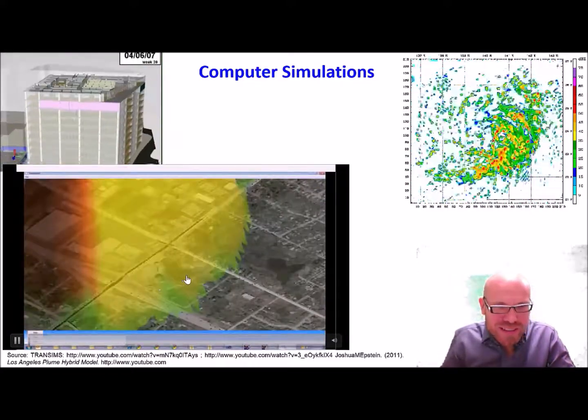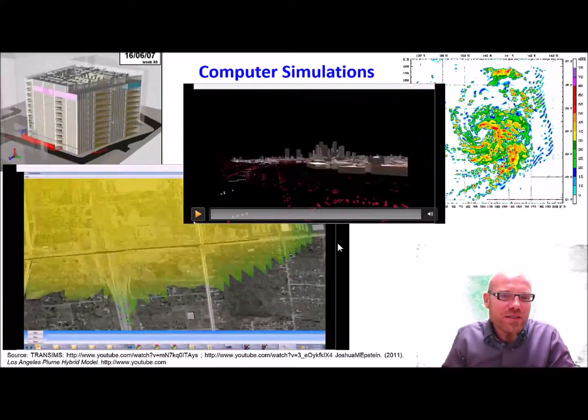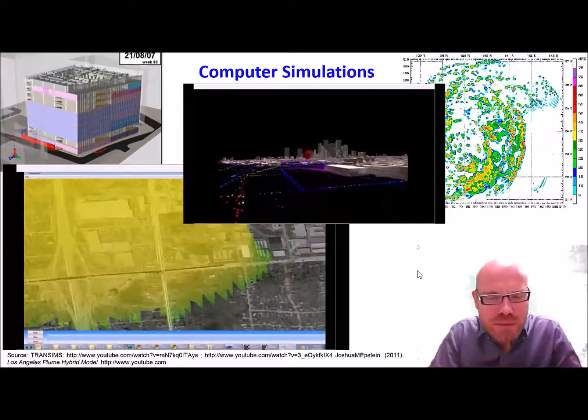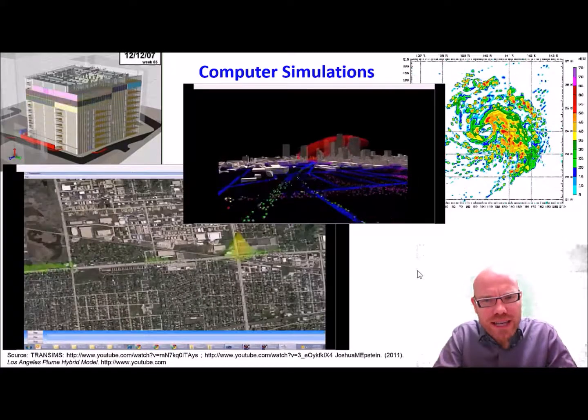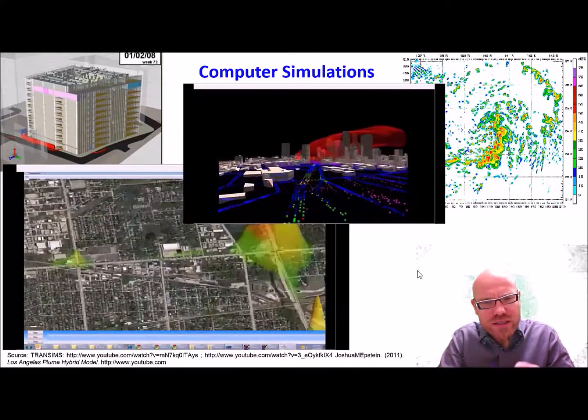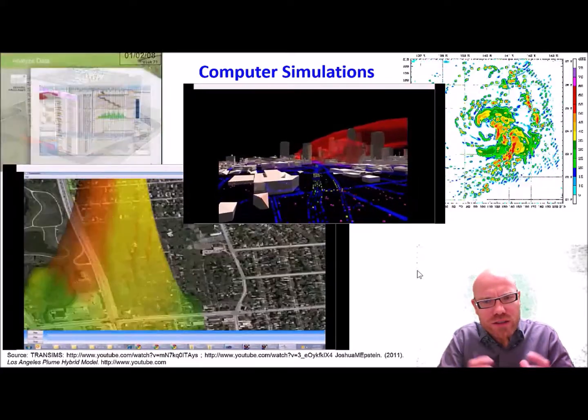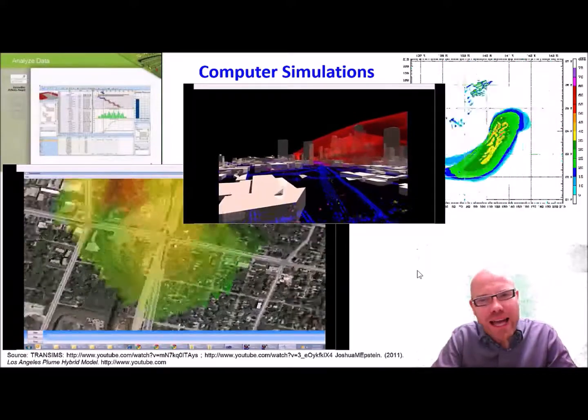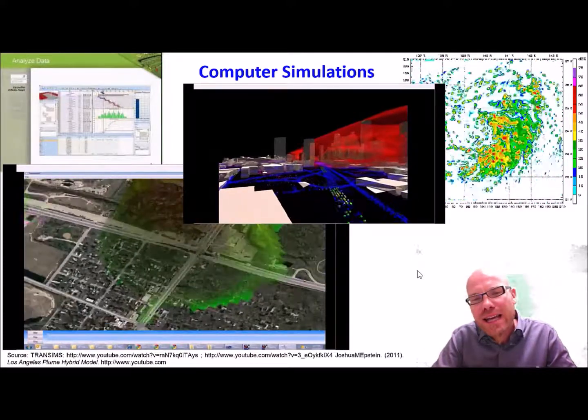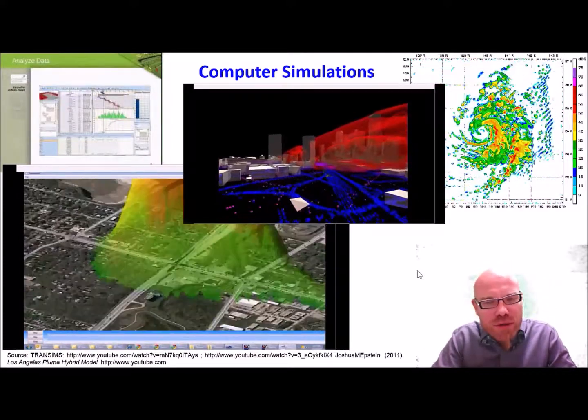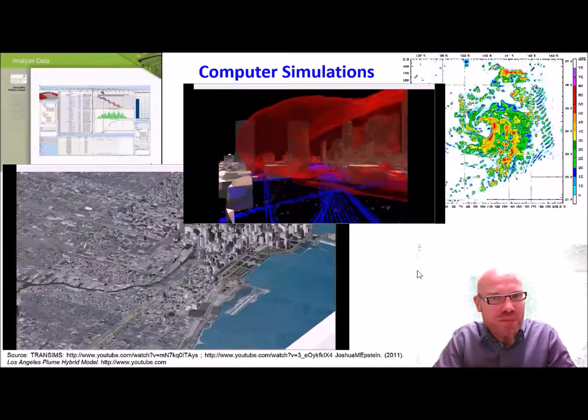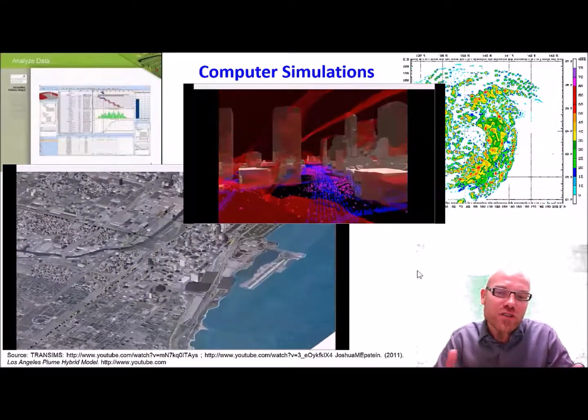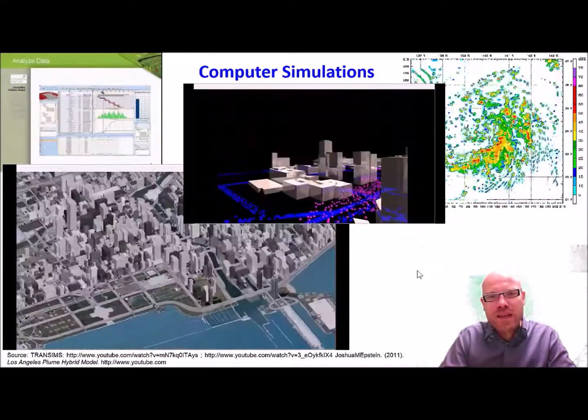We can also simulate, for example, epidemics. This here is a simulation of a terrorist attack in Los Angeles. So Los Angeles was reconstructed and a chemical attack was simulated. And then it was studied how people would try to escape. Which is very important in order to have a better plan for such potential emergencies.